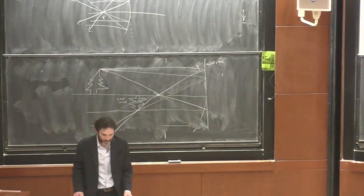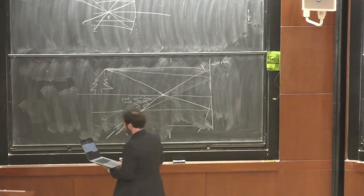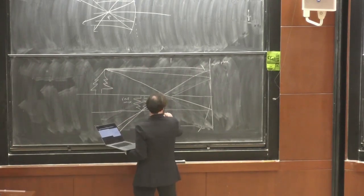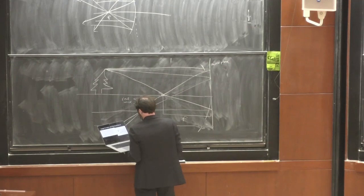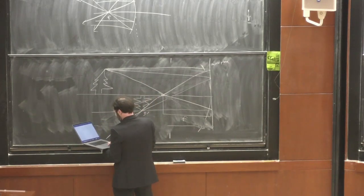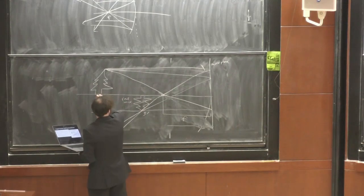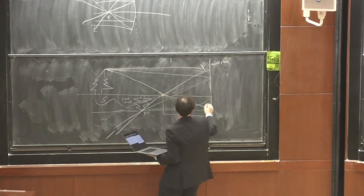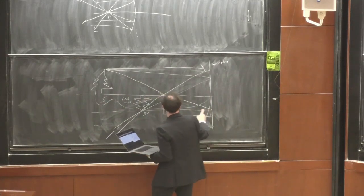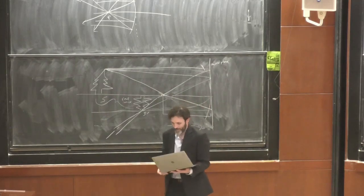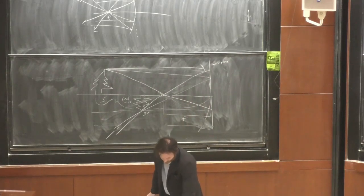Our focal point is here — that's F. I've got my distances: S prime is the distance to the image, S is the distance to the object going all the way from the mirror to the tree, and F is the distance from the mirror to the focal point.